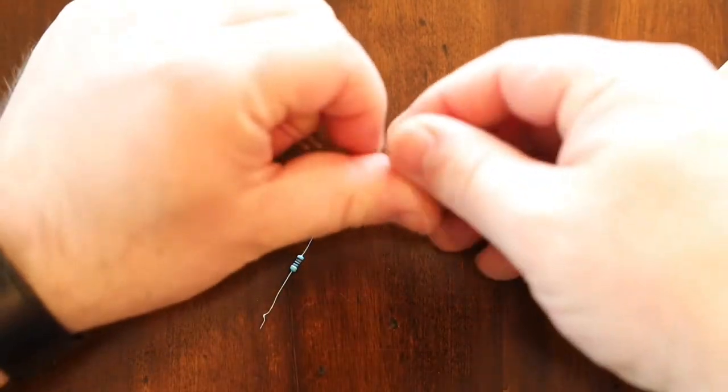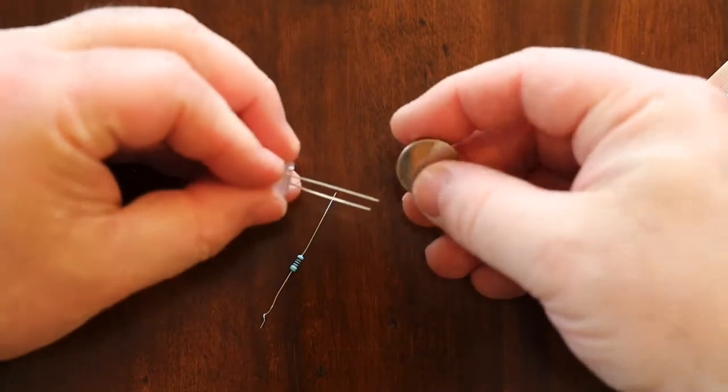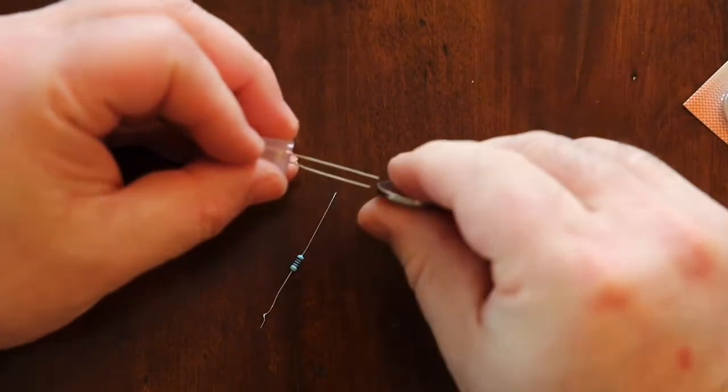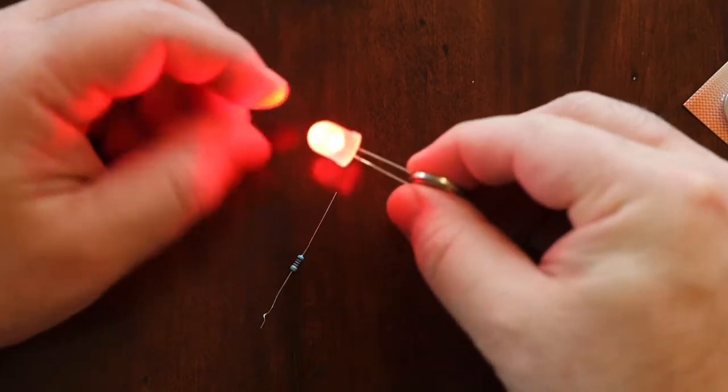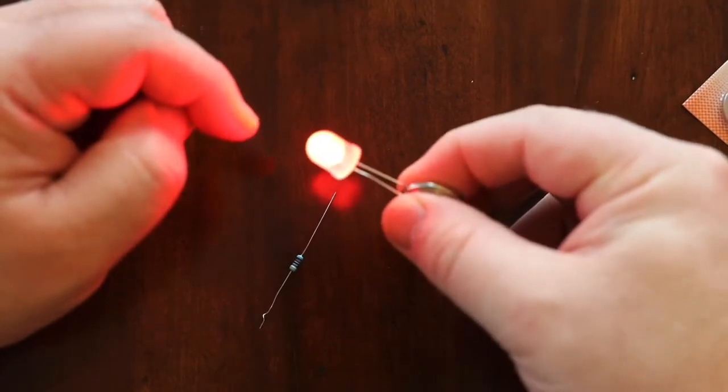Take the battery out of the package and you'll notice just like before, the shiny side is the plus and the rough side is the negative, and it makes your LED work.